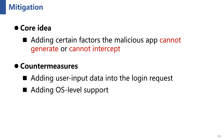We argue that the root cause of the flaw is the MNO server's inability to distinguish different apps on the same device, allowing a malicious app to impersonate a benign app. Correspondingly, we propose countermeasures by adding factors the malicious app cannot generate or intercept. The first is to add user input data into the login request, requiring users to provide information unknown to the attacker, such as their full phone number or family name. The second is to add OS server support — the OS can dispatch a token only to the legitimate app, so even if a malicious app sends a login request, it cannot obtain the corresponding token.